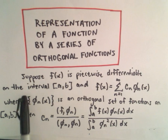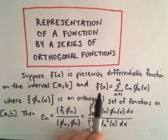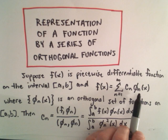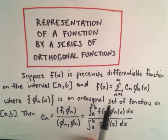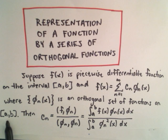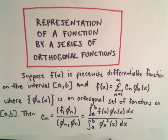Suppose f of x is a piecewise differentiable function on the interval a to b, and that f of x is the summation from n equals 1 to infinity of c sub n times phi sub n of x. Our phi sub n of x is going to be an orthogonal set of functions — recall an orthogonal set just says if we take two distinct members and calculate their inner product, we get 0. Then the formula for c sub n is: take the inner product of f and phi sub n, divided by the inner product of phi sub n and phi sub n.